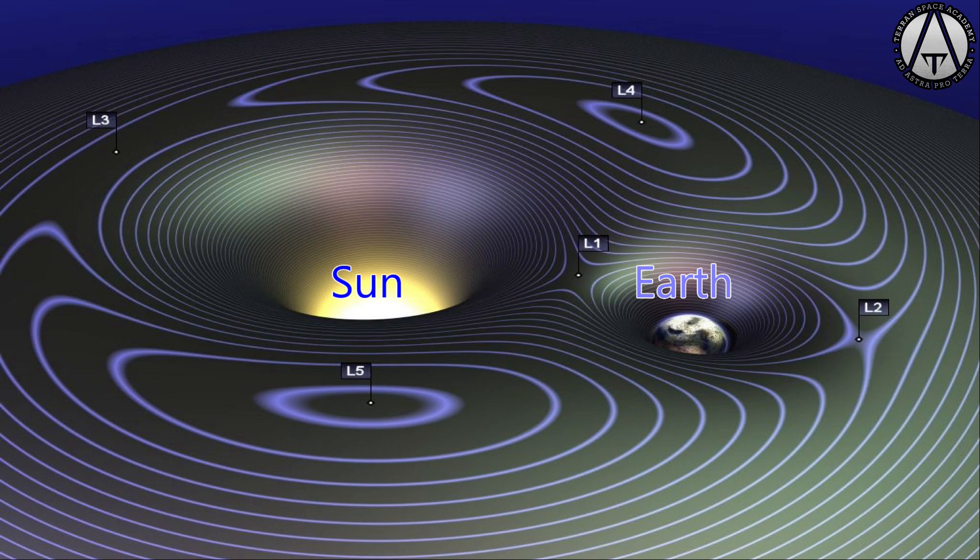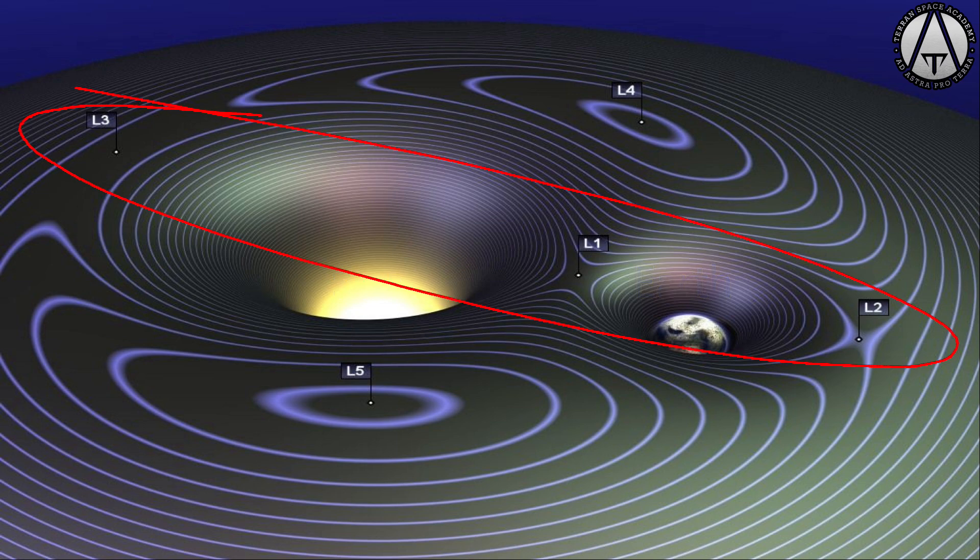These are given the names L1, L2, L3, L4 and L5. Three of them can be thought of as hills: L1, L2 and L3. If you park your spaceship here and use just a little fuel to stay in place, you'll be carried along in the same position relative to these two masses.